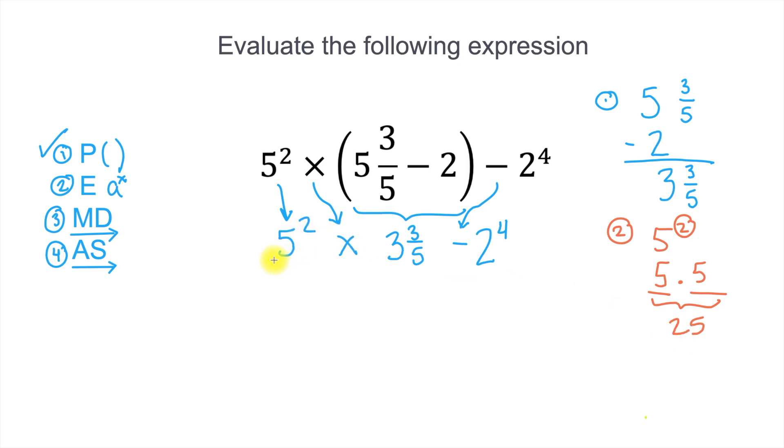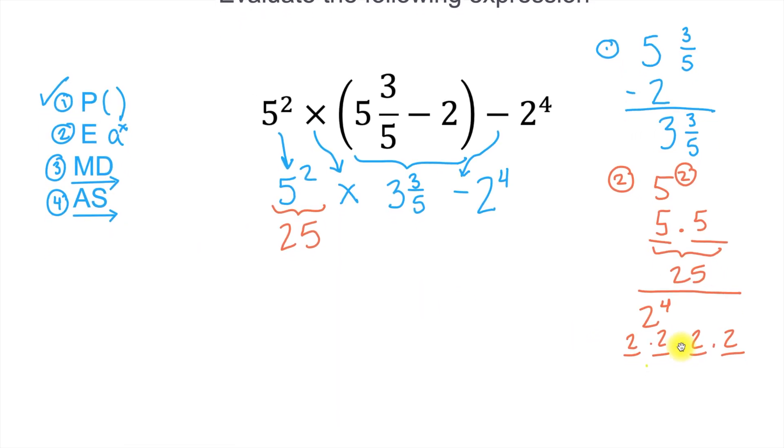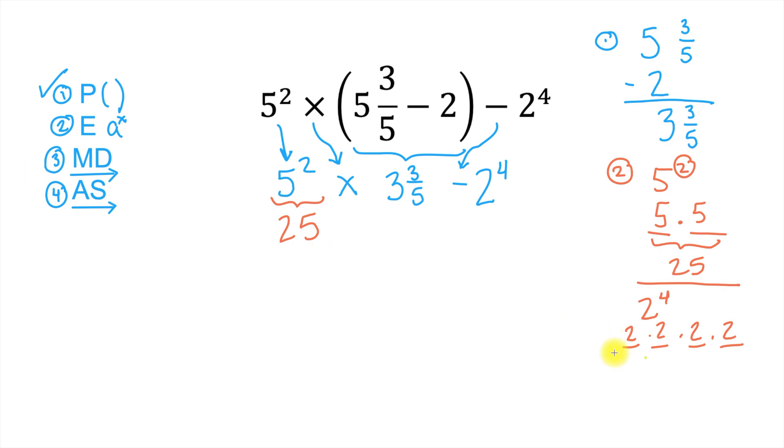So here, where I see 5 to the second power, now I'll write 25 instead. Now, I'll evaluate any other exponents I have, which is here, 2 to the fourth. So I'll do that over here. 2 to the fourth power means I'm taking this 2, and I'm multiplying it 4 times. So I'll write 4 dashes. 1 times 2 times 3 times 4. And in those dashes, I'll write 2s, because that's the base. That's the number I'm multiplying 4 separate times. Now let's move up a little bit. 2 times 2 is 4. 2 times 2 here is 4. And 4 times 4 is 16. So here, where I see 2 to the fourth, I'll write down 16 below that.